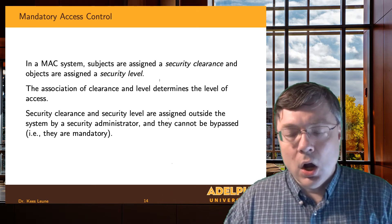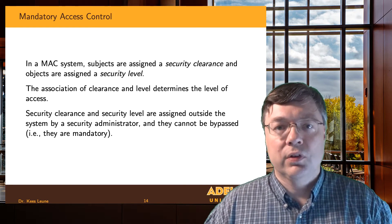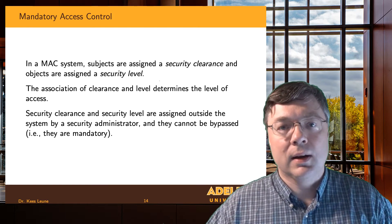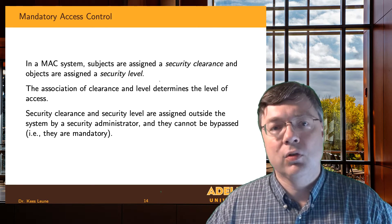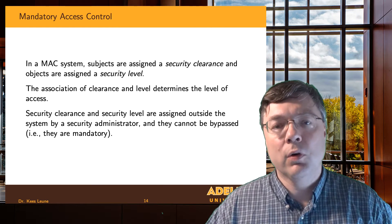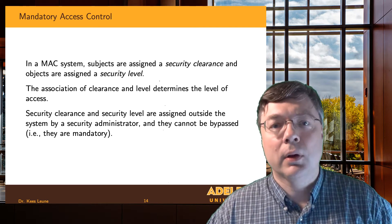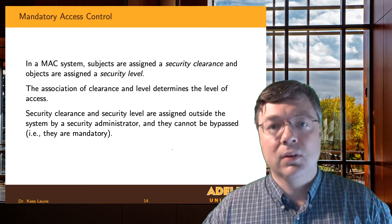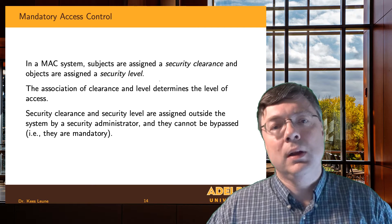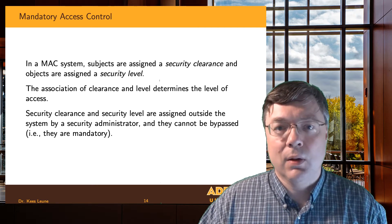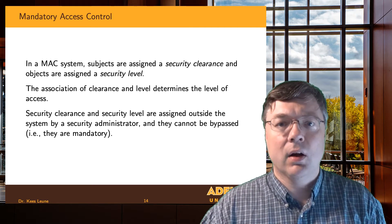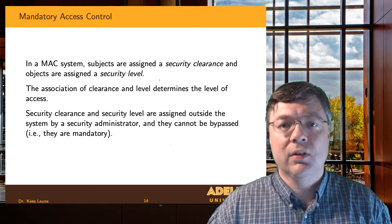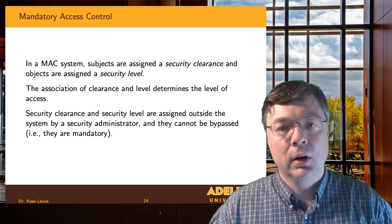Most mandatory access control systems assign clearances for a particular capability. I might have a mandatory access control model that fully focuses on secrecy, and another one that focuses fully on integrity. Those can coexist — they're not in conflict with each other — but it does add complexity. We now have to keep track of what labels objects have, what clearances subjects have, and what the permissions are.